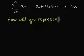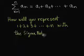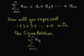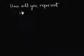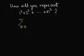How would you represent the sum 1 plus 2 plus 3 plus up to n with the summation symbol? Sigma from k equal to 1 to n of k. And how about 1 square plus 2 square plus 3 square plus up to n square? Summation from k equal to 1 until n of k square.